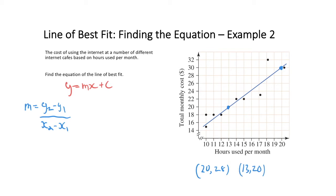So now that I have my two coordinates I can go ahead and substitute them into my equation to calculate the gradient. So that is going to be 20 minus 28 over 13 minus 20, which gives me a gradient equal to 8 over 7.